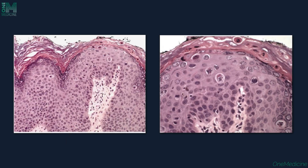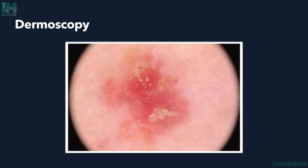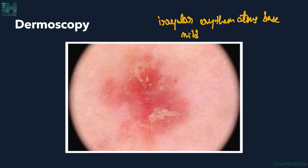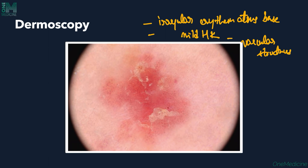Another histopathology image shows an irregularly thickened epidermis with lost architecture — the wind-blown appearance — and atypical mitosis throughout. On dermoscopy, the features of Bowen's disease include an irregular erythematous base, mild hyperkeratosis appearing as mild scaling, and variable vascular structures. These three dermoscopic features — irregular erythematous base, mild hyperkeratosis, and vascular structures — characterize Bowen's disease on dermoscopy, with pinpoint erythematous areas visible.